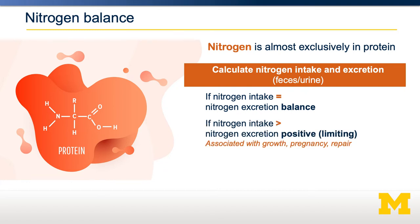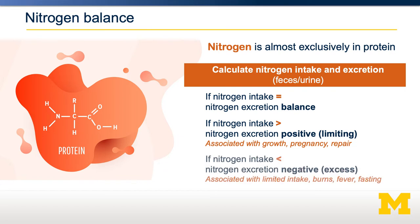If your nitrogen intake exceeds your nitrogen excretion, that means you're in positive nitrogen balance — associated with things like growth, pregnancy, and tissue repair. However, if your nitrogen intake is less than your nitrogen excretion, you're in negative nitrogen balance. That's one way we can determine whether somebody's protein requirements are meeting their body's needs.